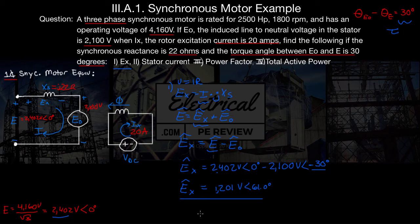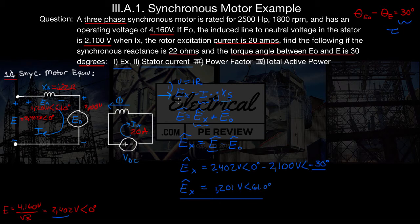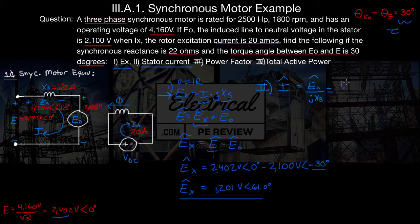So our answer for EX — the voltage across our synchronous reactance — is 1,201 volts at an angle of 61.0 degrees. Moving on, we're asked to find the stator current. Now that we know EX and we know our synchronous reactance, we can use Ohm's Law: stator current I equals EX divided by JX of S. So I equals 1,201 volts at 61.0 degrees divided by J22 ohms.